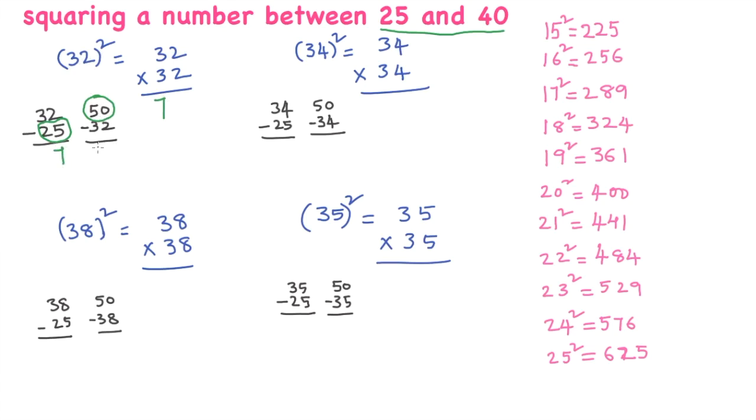What is 18 square? 18 square is 324. So as it is a 3 digit number, you write 3 here and 24 here. Now add these two numbers: 7 plus 3 is 10. 1024. So 32 square is 1024.